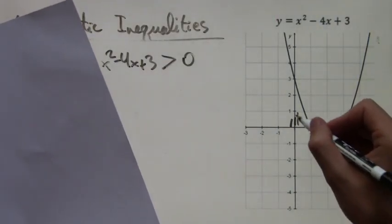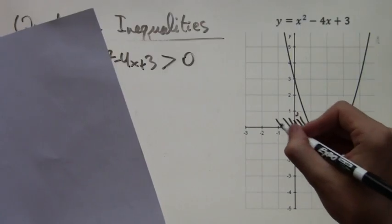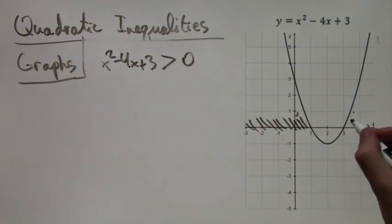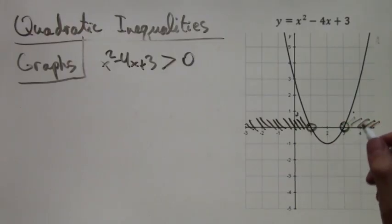So what we have is just all points before x equals 1, and then after that, all points that are greater than x equals 3. So we have two intervals.